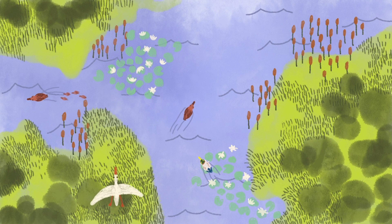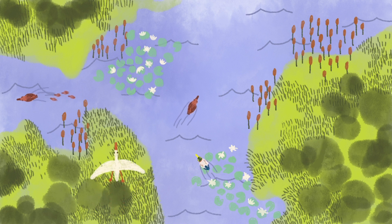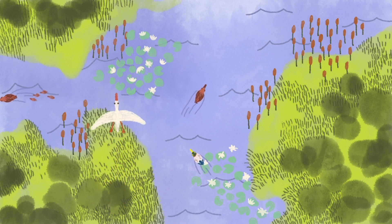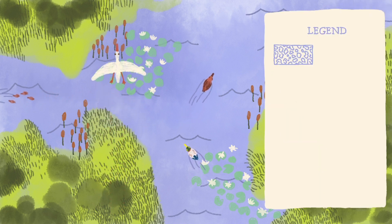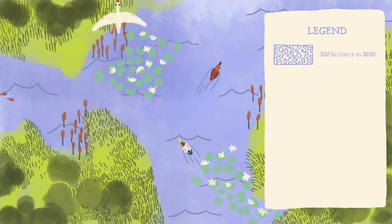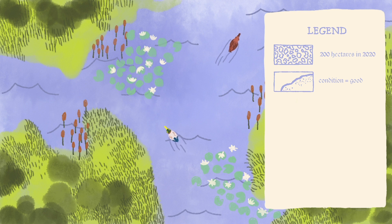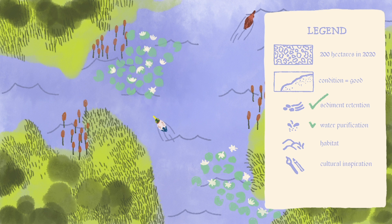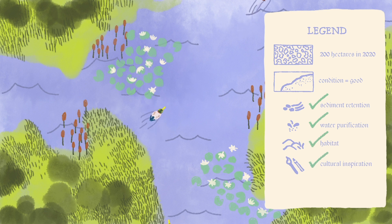Natural capital accounting brings different sets of accounts together under one framework. The accounts consider the extent or size of the asset and how it changes over time. The condition — for example, is the wetland drained or functioning well? The services that the asset provides — is the wetland storing and filtering water by natural processes? And of course, benefits for humans and wildlife, like high water quality.